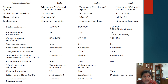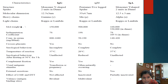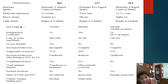Coming to the characteristics of individual immunoglobulins — based on the structure, IgM is basically a pentamer. That is, five units of IgM combine together. While IgG and IgA are usually monomers, sometimes two units combine to form a dimer. Regarding molecular weight, IgM is larger in size compared to IgG and IgA, and since they are larger in size, they sediment easily, so the sedimentation coefficient is also larger for IgM.